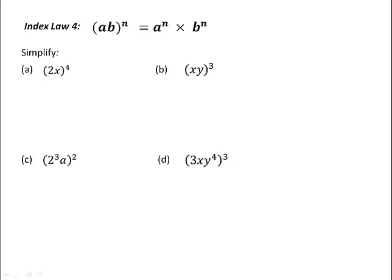We can use this index law to simplify the following problems. 2x all to the power of 4 would be the same as 2 to the power of 4, x to the power of 4, which in simplest terms is 16x to the power of 4.